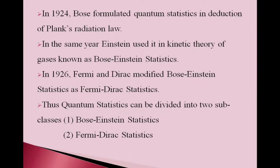In 1926, Fermi and Dirac modified Bose-Einstein statistics as Fermi-Dirac statistics. Thus quantum statistics can be divided into two subclasses: Bose-Einstein statistics and Fermi-Dirac statistics.